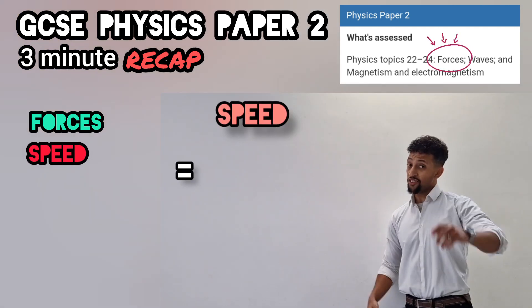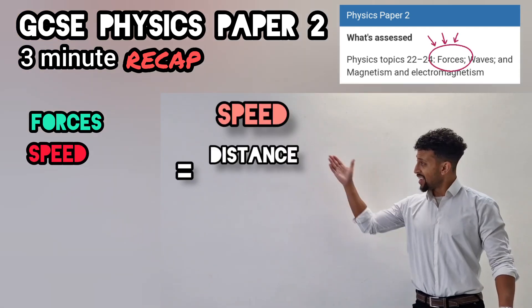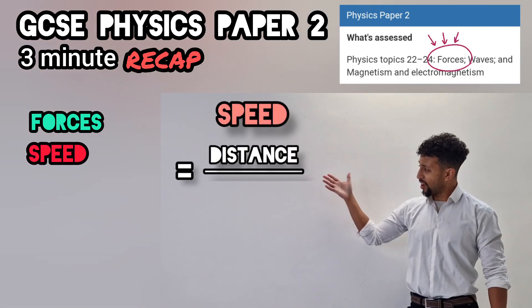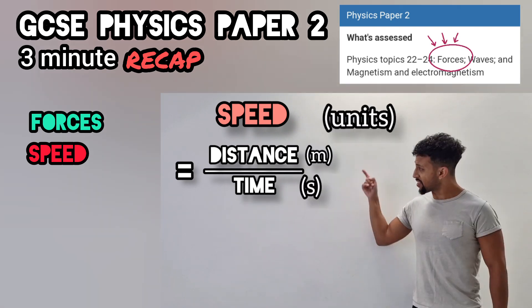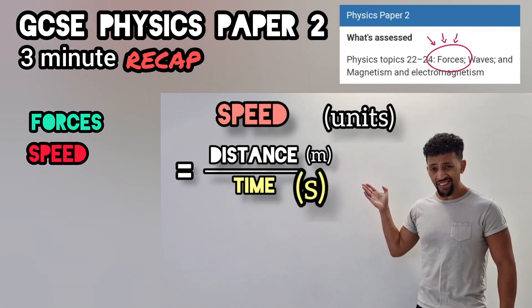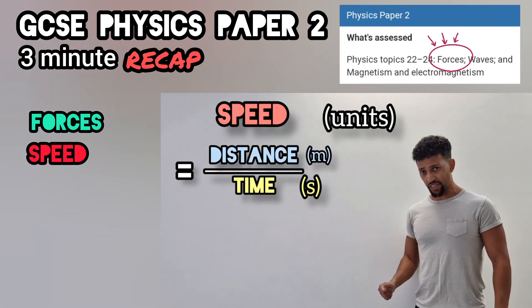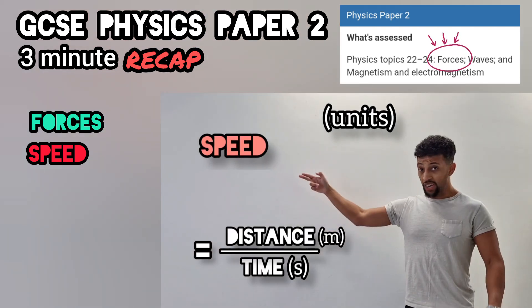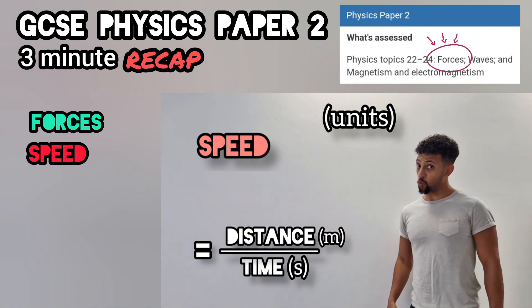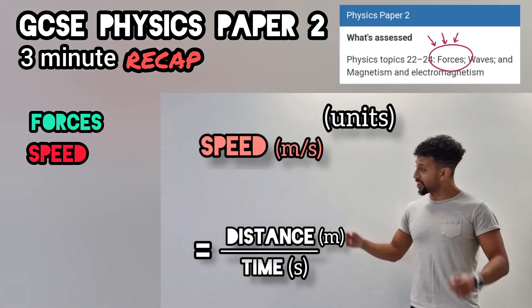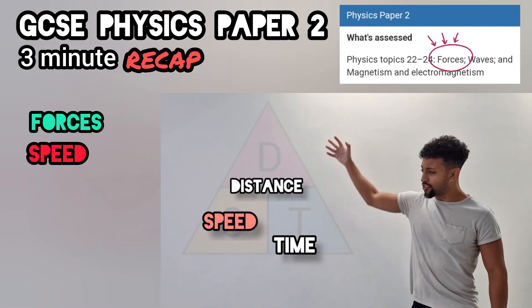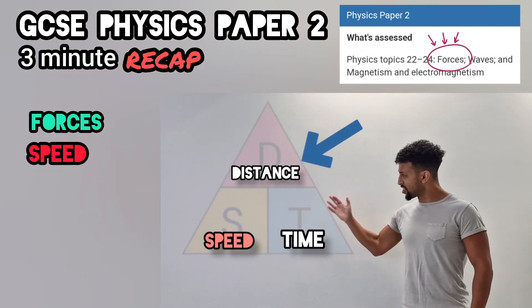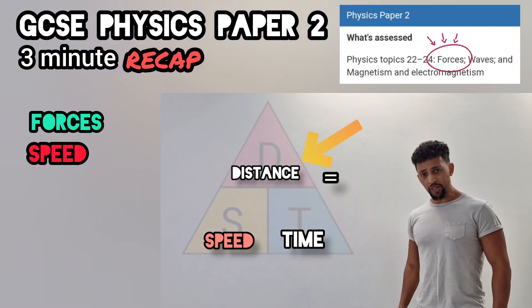Working out speed is easy, you'll find — it's distance divided by time. Keep it in mind that these units feature: time is seconds, distance is meters. Last one left is your secret weapon, know that speed is meters per second. Rearrange all of these and you'll find distance equals speed times time.